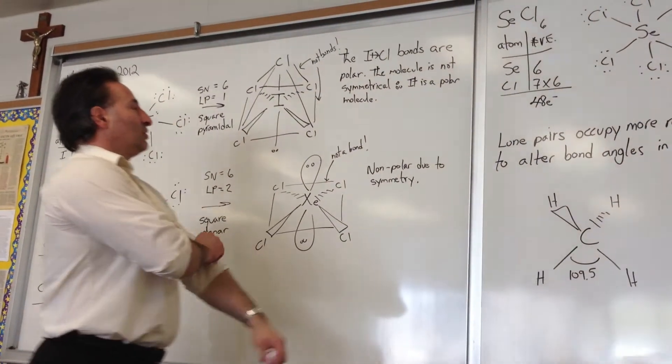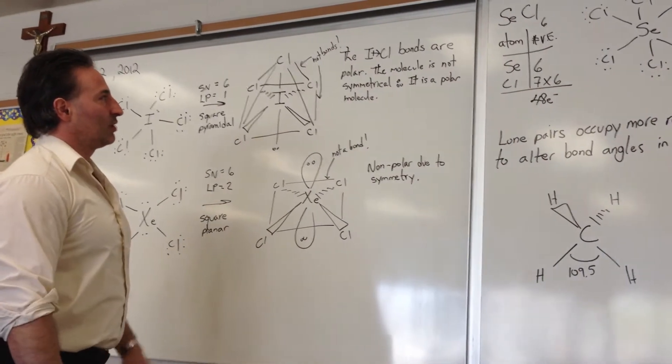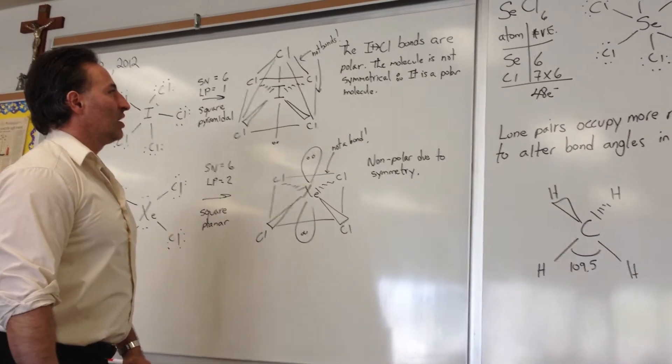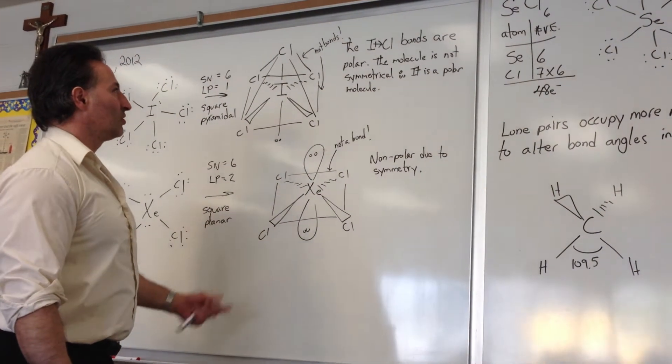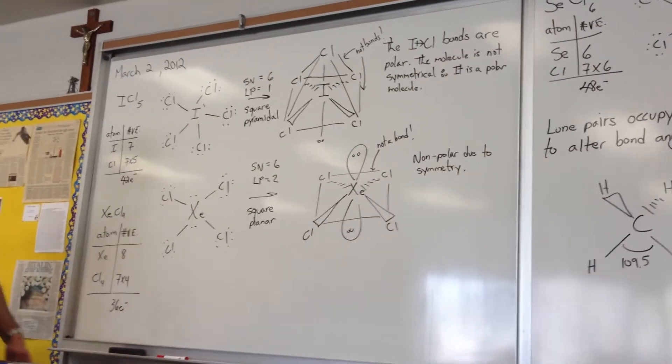The iodine-chlorine bonds are polar. Iodine is less electronegative than chlorine, so the electrons are spending more time close to chlorine. The molecule is not symmetrical, so it is a polar molecule overall. It has polar bonds and it retains the polarity.